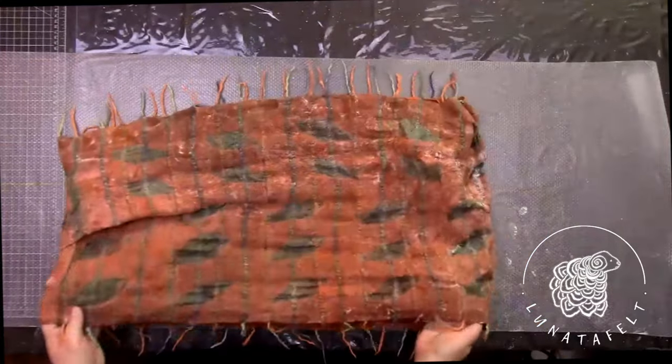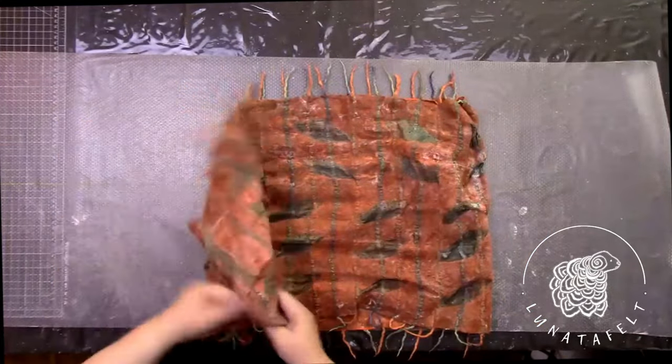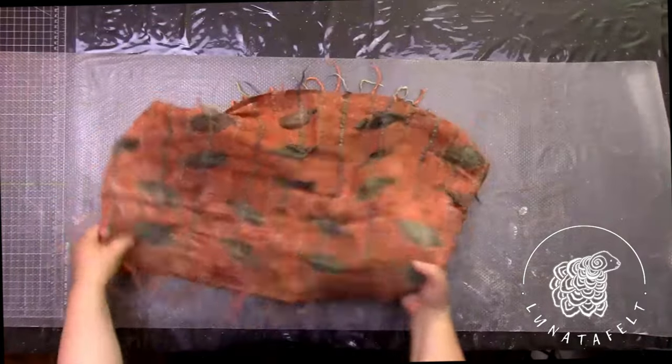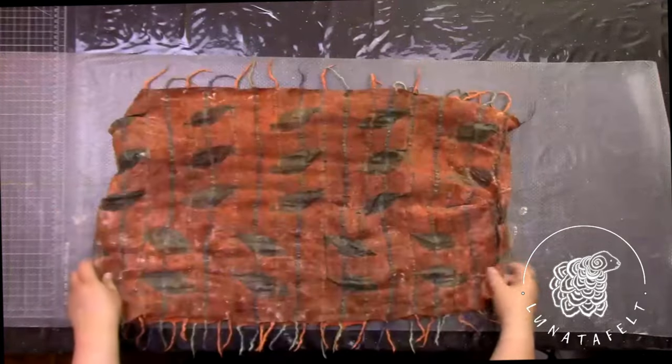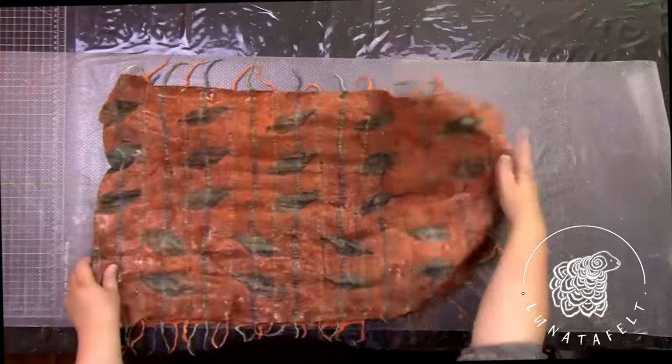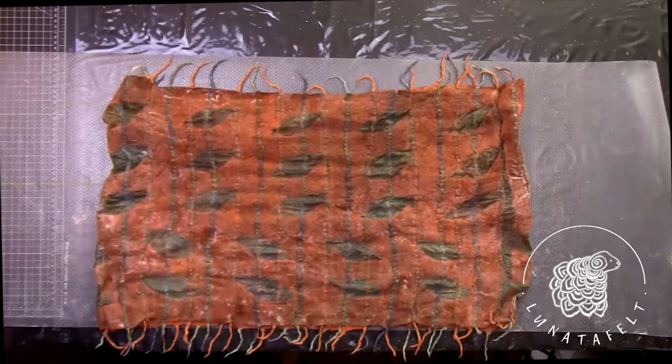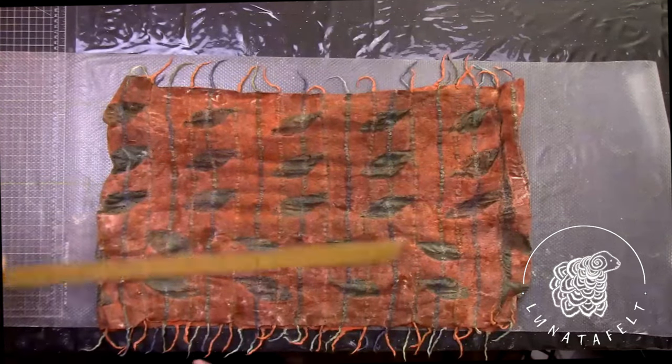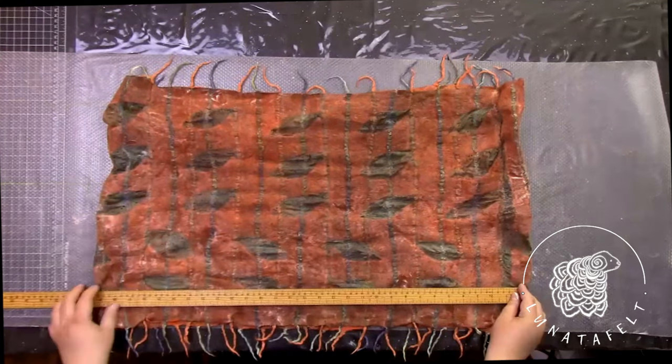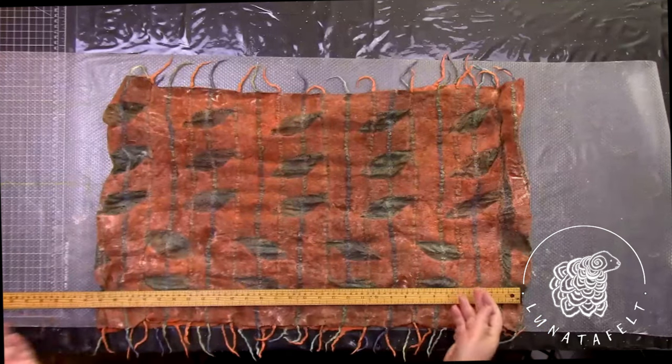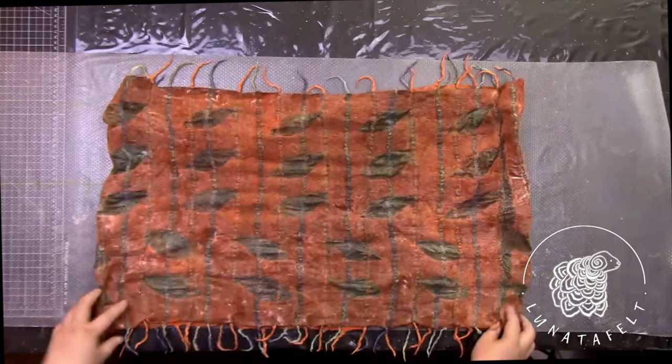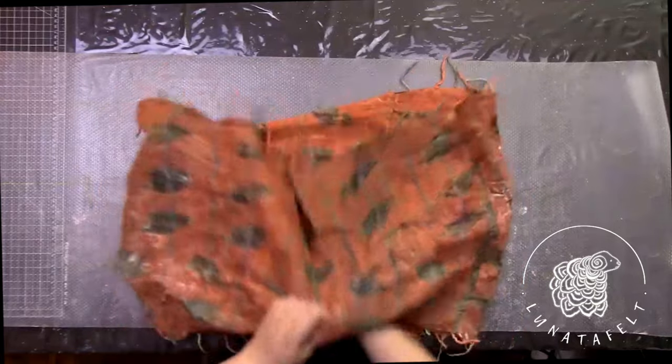The overall shrinkage of the felt in this project, considering the silk, is about 20%. However, the actual shrinkage of the felt could be much greater, but the silk strips prevent the item from becoming too small.